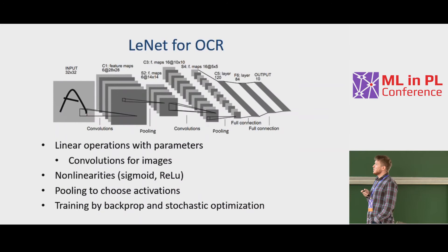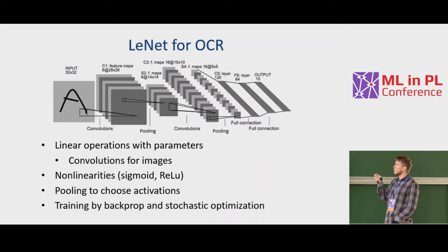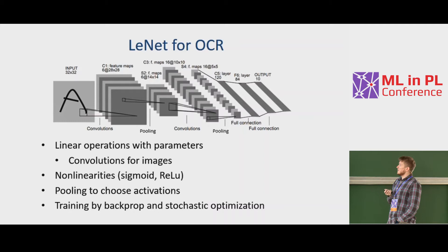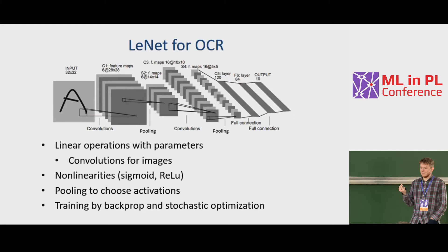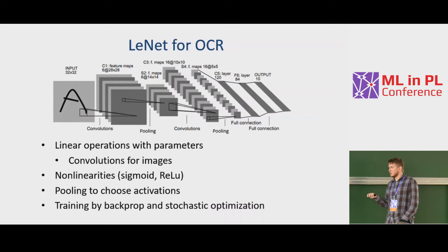We'll start with a classifier that classifies all letters independently — essentially a LeNet for OCR, a standard MNIST-type network. This network consists of linear operations with parameters (convolutions at early layers, fully connected or affine layers at the end), nonlinearities such as sigmoid or ReLU, and pooling operations which pick peak activations among sets of activations. The system is trained by applying stochastic minimization to cross-entropy loss, with gradients computed via backpropagation.